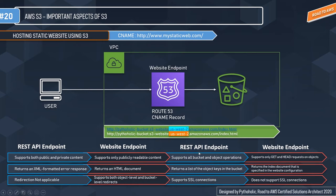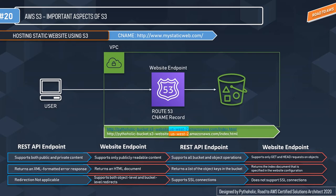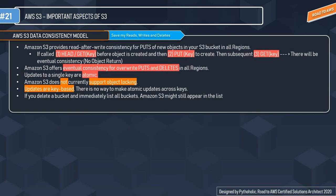REST API endpoints support SSL connections over HTTPS, but website endpoints do not support SSL. So these are the differences between using REST APIs versus the website endpoint to access or perform operations on the bucket. That's a brief overview of how you can host your own static website on S3.